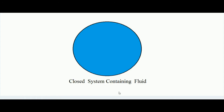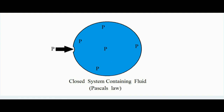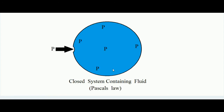Hydraulic brakes work on the principle of Pascal's law. Suppose there is a closed system — the black outline represents the closed system — and inside it there is some fluid. The fluid could be vapor, gas, or liquid. Pascal's law says that if we apply a pressure P at any point from outside, everywhere inside the pressure will become P.